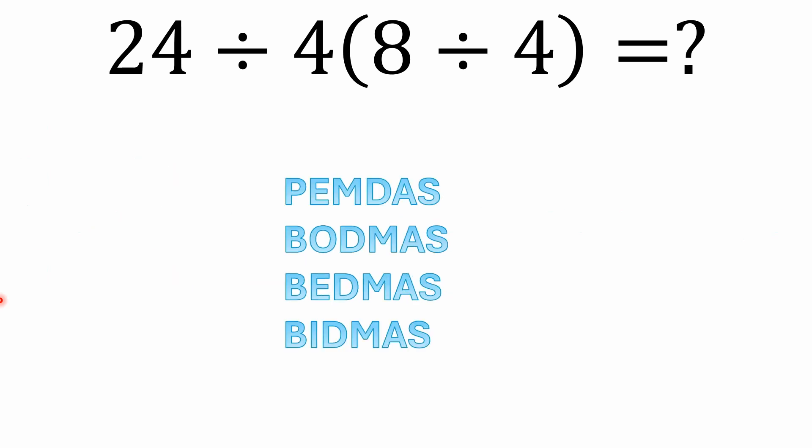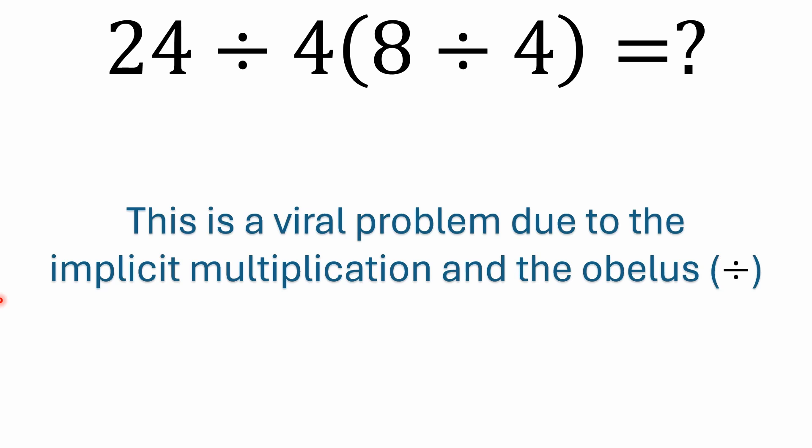So you've got all these different acronyms: PEMDAS, BODMAS, BEDMAS, BIDMAS. They all really give you the same answer. But it's a viral problem due to really two things. This problem is viral really due to implicit multiplication, which there's some historical context for giving implicit multiplication precedence over explicit multiplication or division. And then there's also confusion over the obelus, which is often really not recommended to be used as a division symbol. But we'll go through and discuss this a little bit more.